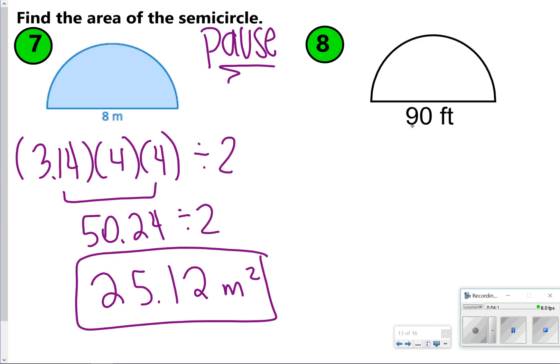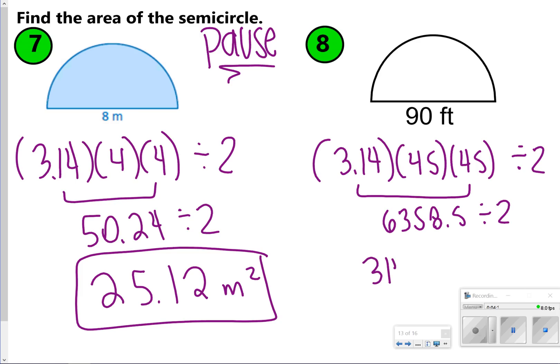Same thing for number 8, you need to use half of 90, so we're going to use 45 as the radius, so 3.14 times 45 times 45, and then we'll divide it by 2. When we do this first part, 3.14 times 45 times 45, we get a big number, 6,358.5. And then when we cut it in half, we get 3,179.25, and that'll be feet squared.